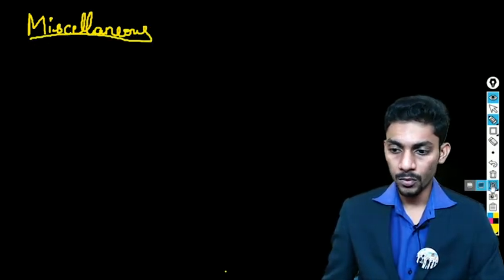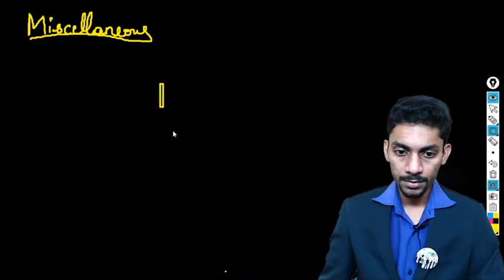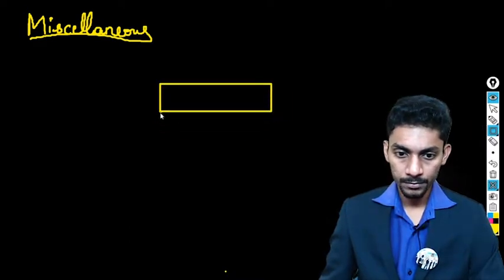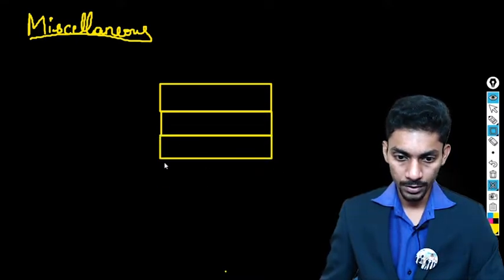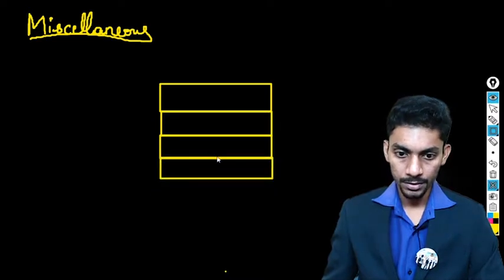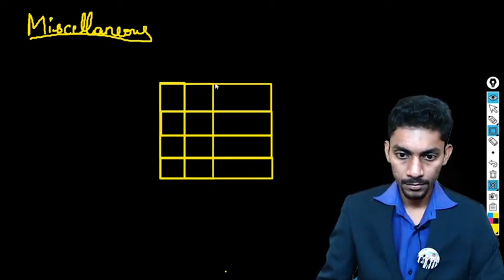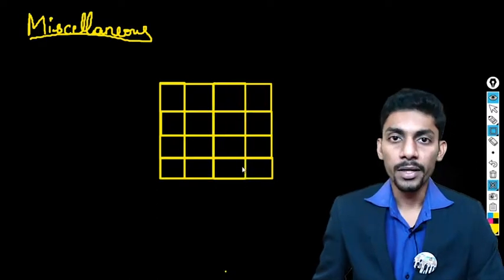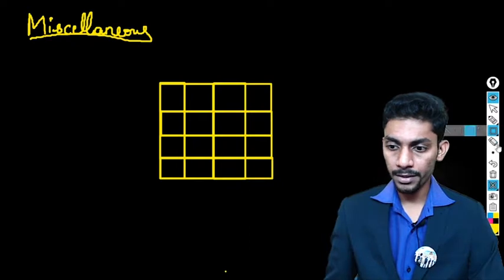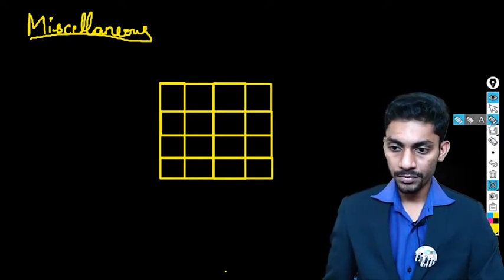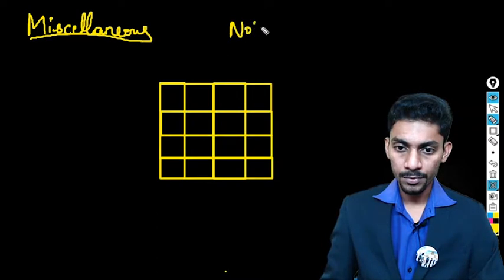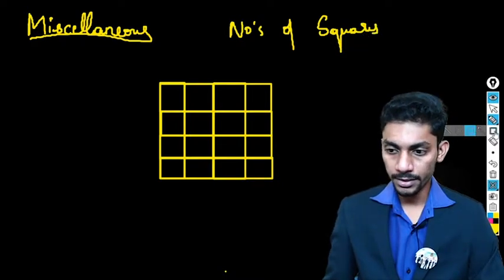Let's understand what miscellaneous is. The questions will be something like this — imagine a properly drawn 4×4 square. We need to find out the total number of squares in that figure. That is the kind of question asked in SSC CGL.